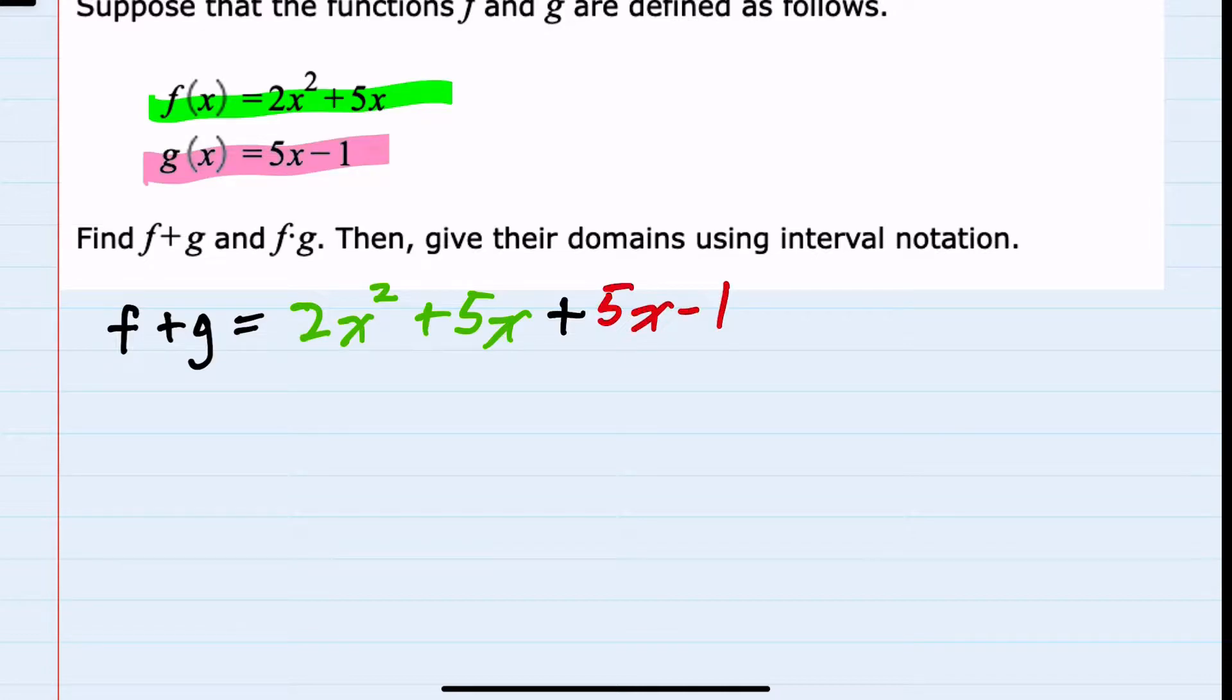And from here, we should see if any of these will simplify, and I can combine like terms with the two 5x terms. So that would give me the 2x squared from above. 5x plus 5x would be plus 10x, and then bringing down the minus 1, this would be our f plus g function.